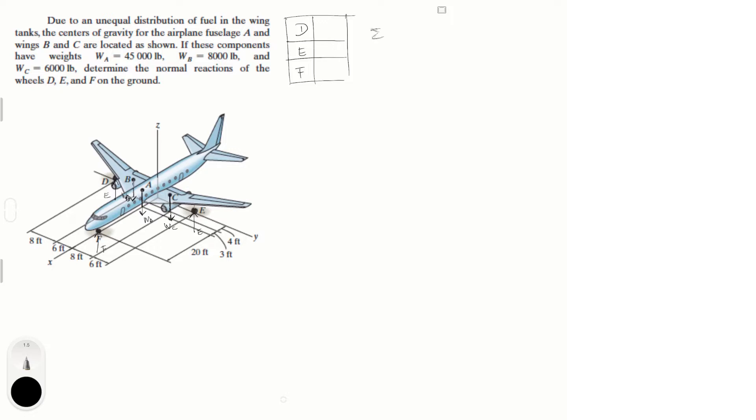So, the first and obvious equation is sum of the forces in the Z axis, and it is equal to zero. It is D plus E plus F, which are the reactions at the wheels, minus all the weights WA, WB, and WC. So, this comes out to be D plus E plus F is equal to 59 kip. I didn't just add all the pounds because I didn't want to be dealing with all the zeros, so I just transformed it to 59 kip. Now, this gives us our first relationship.